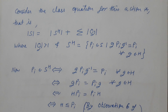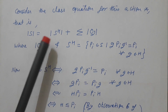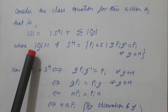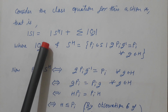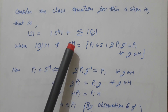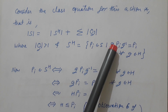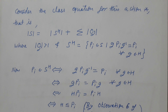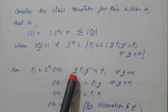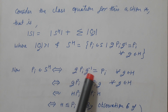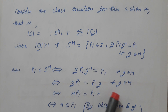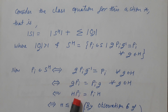Consider the class equation for this action: |S| = |S_H| + Σ|O_j| (for orbits with more than one element), where S_H is the fixed point set — those Pi in S such that g·Pi·g⁻¹ = Pi for all g in H. Taking Pi in S_H, this condition gives g·Pi = Pi·g for all g in H, so H·Pi = Pi·H.